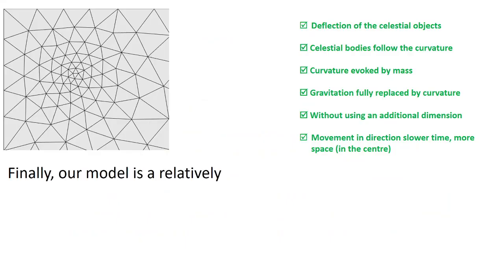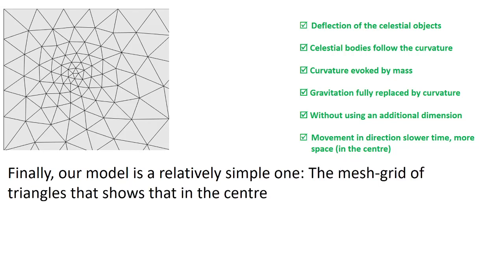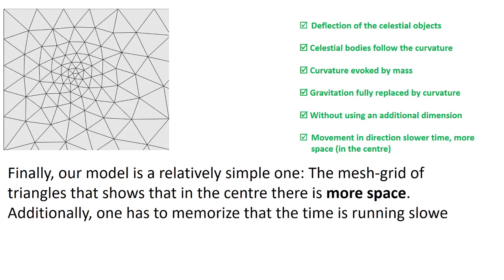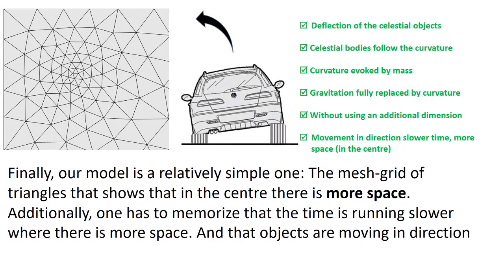Finally, our model is a relatively simple one. The mesh grid of triangles that shows that in the center there is more space. Additionally, one has to memorize that the time is running slower where there is more space. And that objects are moving in direction to more compact space and slower time.